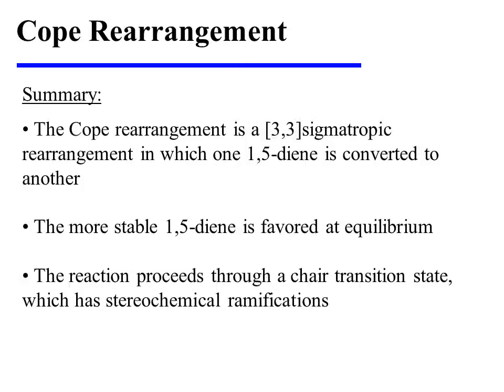In summary, the COPE rearrangement is a 3,3-sigmatropic rearrangement in which one 1,5-diene is converted to another. The more stable 1,5-diene is favored at equilibrium. And the reaction proceeds through a chair-like transition state, which has stereochemical ramifications.